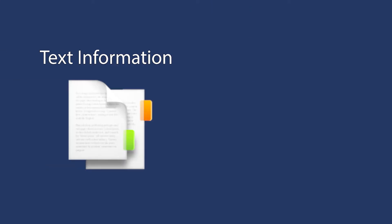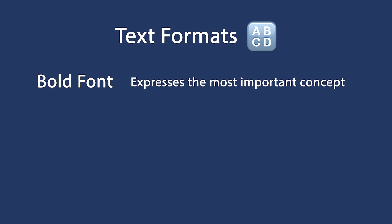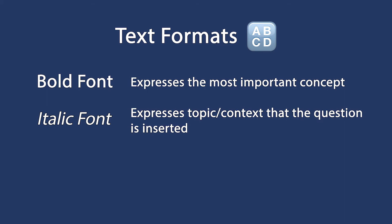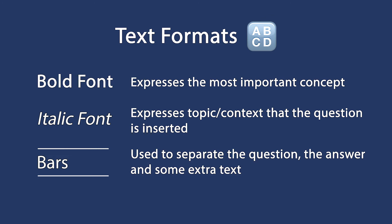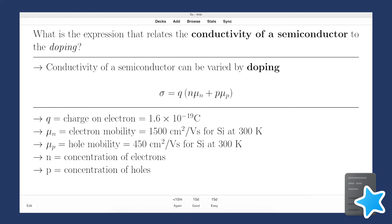So, how do you add context and cues to your flashcards? By adding information in the text or visually through images. Starting with text: use different text formats — bold font for the most important concepts of the card, italic for the topic context in which the question is inserted, and bars to separate the question, the answer, and some extra text. For example, bold font expresses the main topic (conductivity of a semiconductor), italic shows the subtopic (doping), and you can use underline for a mathematical expression. The bars separate the question, answer, and extra text, which can add subtitles to an image or information about an equation.